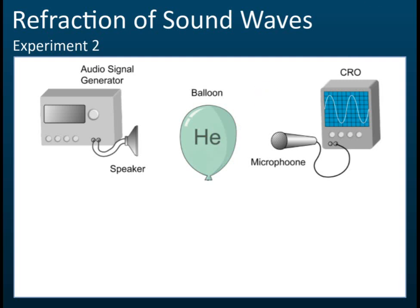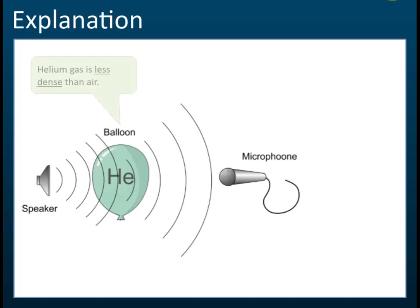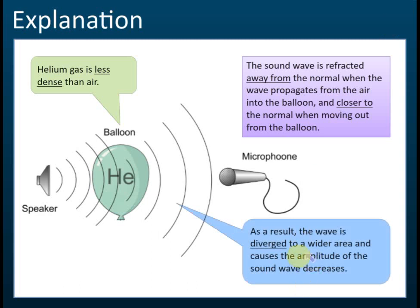In the second experiment, we fill the balloon with helium gas and find a different result. With the helium balloon, the amplitude becomes lower — unlike the carbon dioxide balloon where amplitude was higher. This is because helium is less dense than air. When the wave enters the balloon, it bends away from the normal, and when it exits it bends closer to the normal. As a result, the wave is diverged to a wider area, the energy is spread out, and the amplitude decreases.